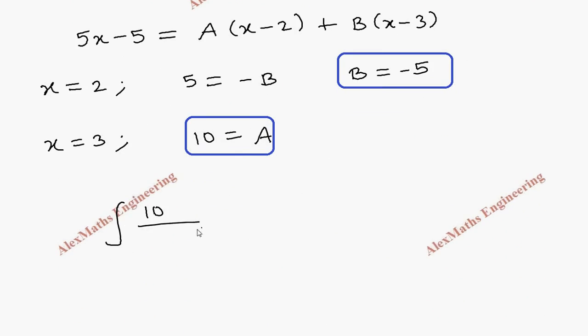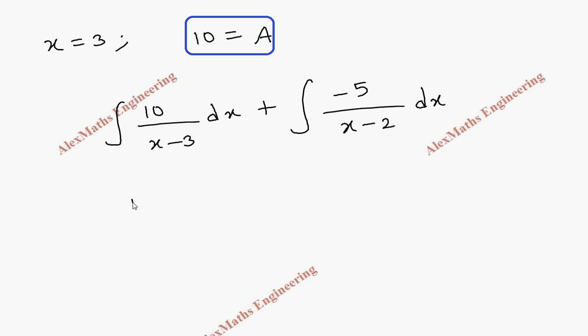So A by (x - 3), so now this will become integral 10 by (x - 3) dx plus B which is -5 by (x - 2) dx. Now this will be 10 log |x - 3| and the next term is -5 log |x - 2| plus c₂.